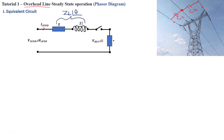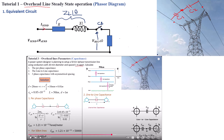Moving on, we've got the receiving end voltage, which will be sitting right here at this point — just before the circuit breaker is closed. Once we close the circuit breaker, we're going to attach the load on the receiving end of the circuit. If you want to know more about overhead line parameters calculations like resistance, capacitance, and inductance, please watch the tutorial series on overhead line parameter calculations — tutorials 1, 2, and 3. The tutorial links are in the description box.